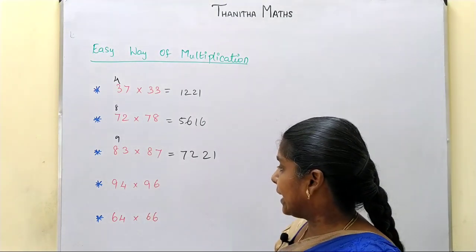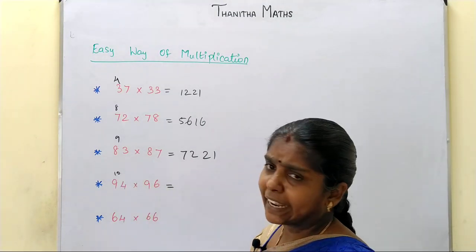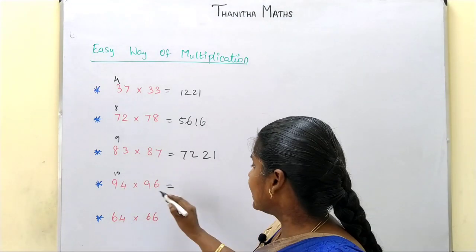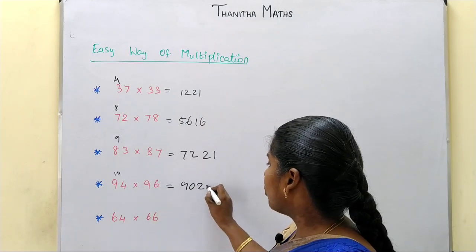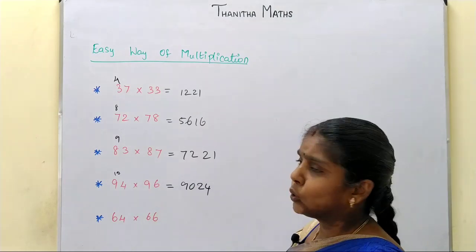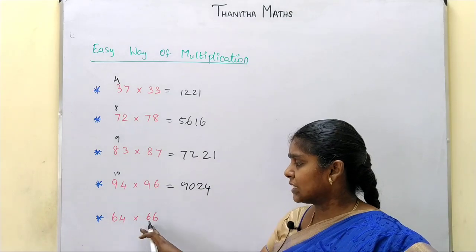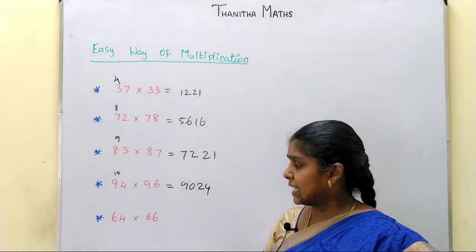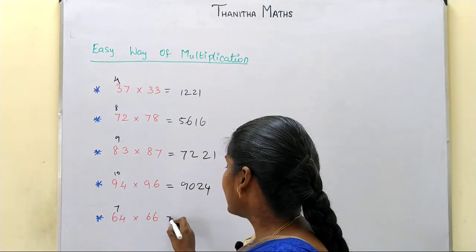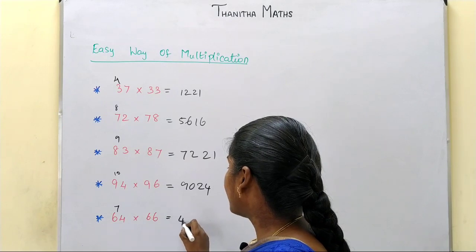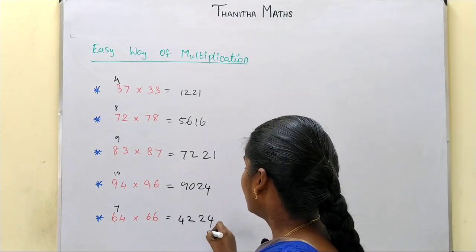94 and 96. So 9 is 10, so 9×10 is 90. 4×6 is 24. So 90 and 24 — that's the answer. Next, 64 and 66. 6 is 7, so 6×7 is 42. 4×6 is 24. That's the answer.